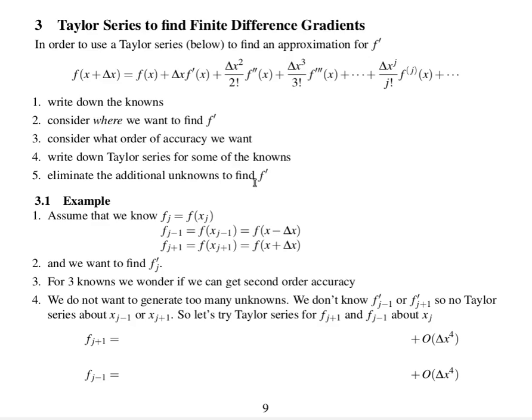So, as an example, we can assume that we know function f at position xj, xj minus 1, and xj plus 1, and we want to find the gradient at fj. So, we are going to write down some Taylor series to do this. We have got three knowns, fj, fj minus 1, and fj plus 1.